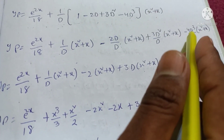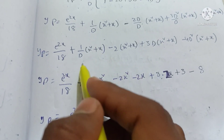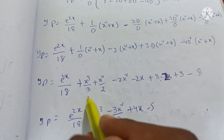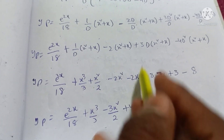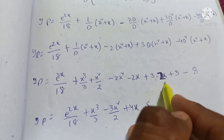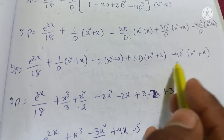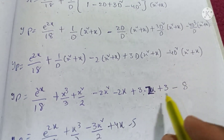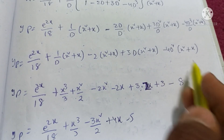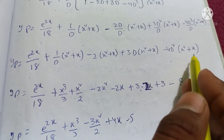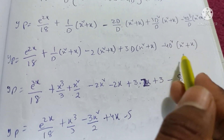Expanding term by term: 1/D·(x² + x) gives integration → x³/3 + x²/2. Then -2D/D·(x² + x) = -2(x² + x). Then 3D²/D·(x² + x) = 3D·(x² + x) = 3(2x + 1). Then -4D²/D·(x² + x) = -4·2 = -8, since D²(x² + x) = 2.